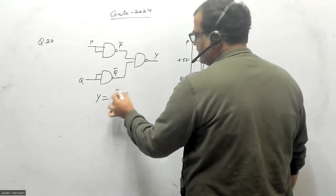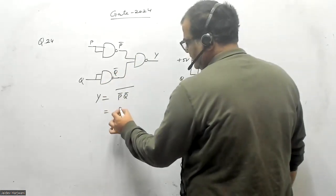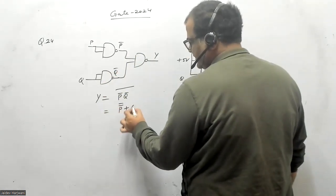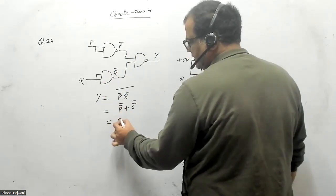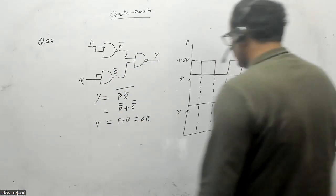And again, the output Y will be given P bar, Q bar, and whole bar. So if we solve this one, this will give you P P bar plus Q Q bar, that is P plus Q. So that is our OR gate, P or Q.